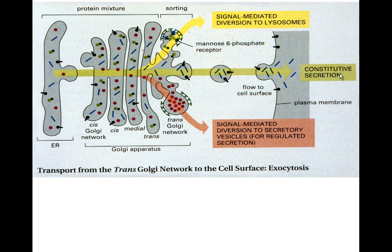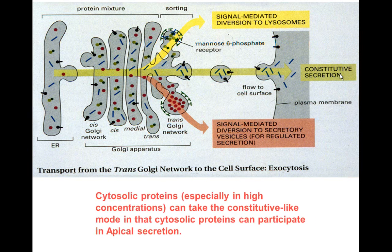Constitutive secretion does not require a signal — as soon as it's made, it's released, like from a plasma cell. In contrast, if mannose-6-phosphate is present, the protein is designated to go to a lysosome. There is also signal-mediated secretion — for example, insulin in the case of pancreatic acinar cells will cause granules to be released. So there are three destinations: default constitutive secretion, signal-mediated secretion, or the lysosome — that is the protein sorting associated with the Golgi apparatus.